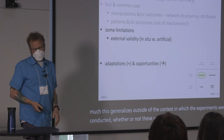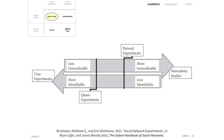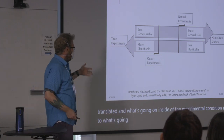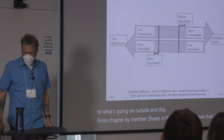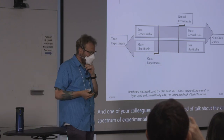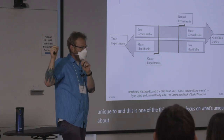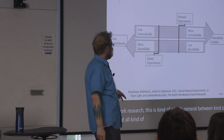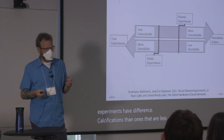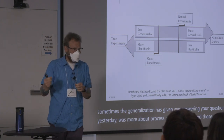This is from a chapter by Matt Brashears and a colleague in the Oxford Handbook that came out a couple years ago, where they talk about the spectrum of experimental approaches available generally and within networks in particular. I would argue that something unique to network research is that a lot of our experiments have different causal implications than less relationally oriented research — in that sometimes the generalization, as Jim was answering a question yesterday, is more about process and mechanism. And those are the things we're trying to generalize, instead of from sample to population.